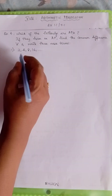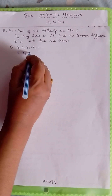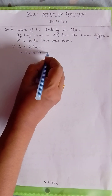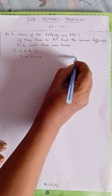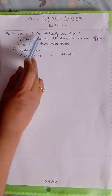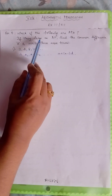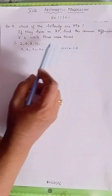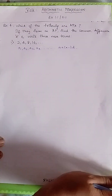So I hope you remember — I have already told — terms will be in the form of A1, A2, A3, A4, so on till A plus N minus 1 into D. They have already given 4 terms. First, we should see which of the following are AP. Then, if they form an AP, we have to find the common difference and then write 3 terms. So 3 things we are going to do.